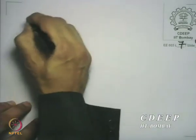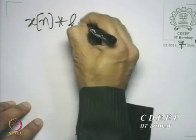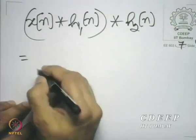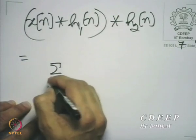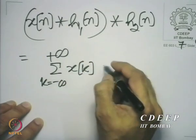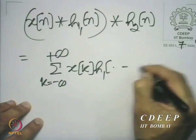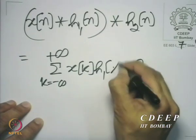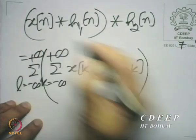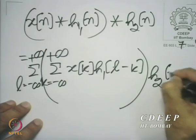Continuing with the left hand side: x(n) convolved with h1(n), further convolved with h2(n), becomes a summation over k. Here I need to bring in one more variable — let us call it l. So we have a summation over l from minus to plus infinity, giving summation over k of x(k) · h1(l) · h2(n − l), with a summation over l of h2(n − l). This is the complete left hand side expression.